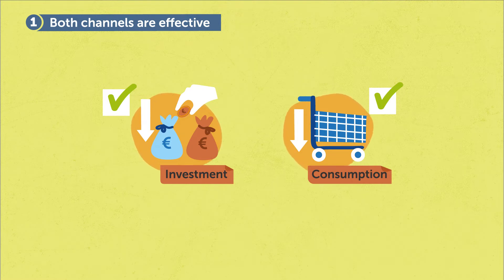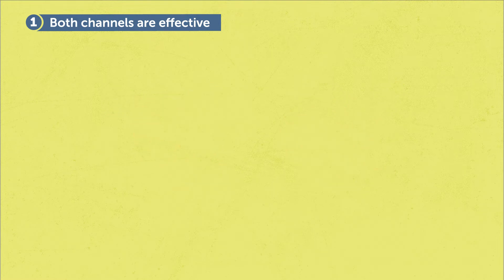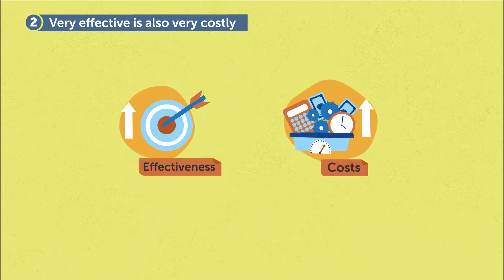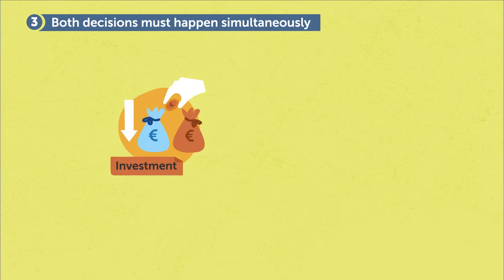So the second question is: what's the optimal mix? What we find in the model is that if one of these channels is especially effective, that typically means it's also costly. For example, if not eating meat by you means that others will not jump in, that also means that a reduction in meat consumption for you is more costly in equilibrium. That has the consequence that the efficient mix of the two channels always involves both — you should always reduce investment and reduce consumption.